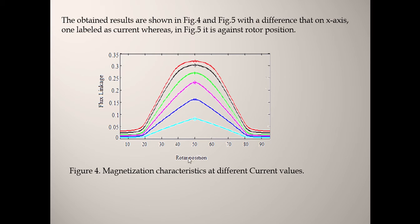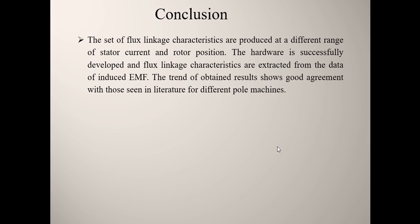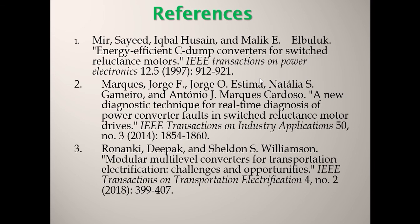The obtained results are shown in figures four and five. The x-axis in figure four is labeled as current, and in figure five the x-axis is rotor position — showing flux linkage with respect to rotor position at different values of current. The magnetic characteristics at different current values and different rotor positions are clearly visible. In conclusion, a set of flux linkage characteristics are produced at different ranges of stator current and rotor position. The hardware was successfully developed and flux linkage characteristics were extracted from the induced EMF data, showing good agreement with results seen in the literature.